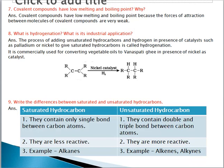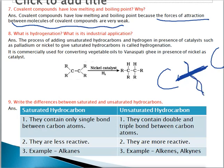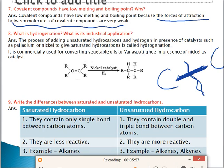Now question seven: covalent compounds have low melting and boiling point. Covalent compounds have low melting and boiling point whereas ionic compounds have high melting and boiling point. Why? Because the force of attraction between the molecules of covalent compounds is very weak. The covalent bond is formed by sharing of electrons, so the force of attraction between covalent compounds is very weak and this bond can be easily broken down. That's why covalent compounds have low melting and boiling point.